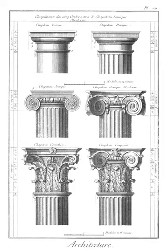Eustyle: intercolumniation defined by Vitruvius as being of the best proportion, i.e. two and a quarter diameters.